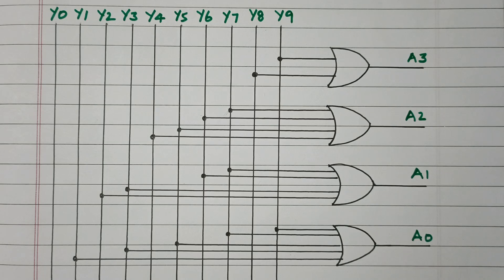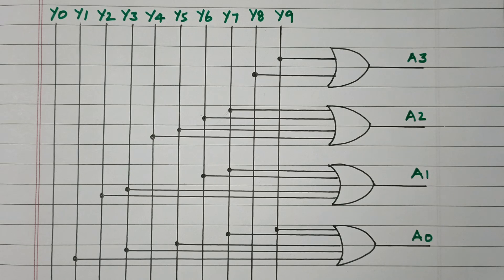In this video, we discussed the 16 to 4 encoder — that is, the decimal to BCD encoder. We discussed the block diagram, truth table, and from the truth table we designed the logical expressions. The logical expressions were then implemented with logic gates. Subscribe the channel for more videos and notifications. Soft copy of this material is available in the drive — the link is given in the description box. Thank you for listening.